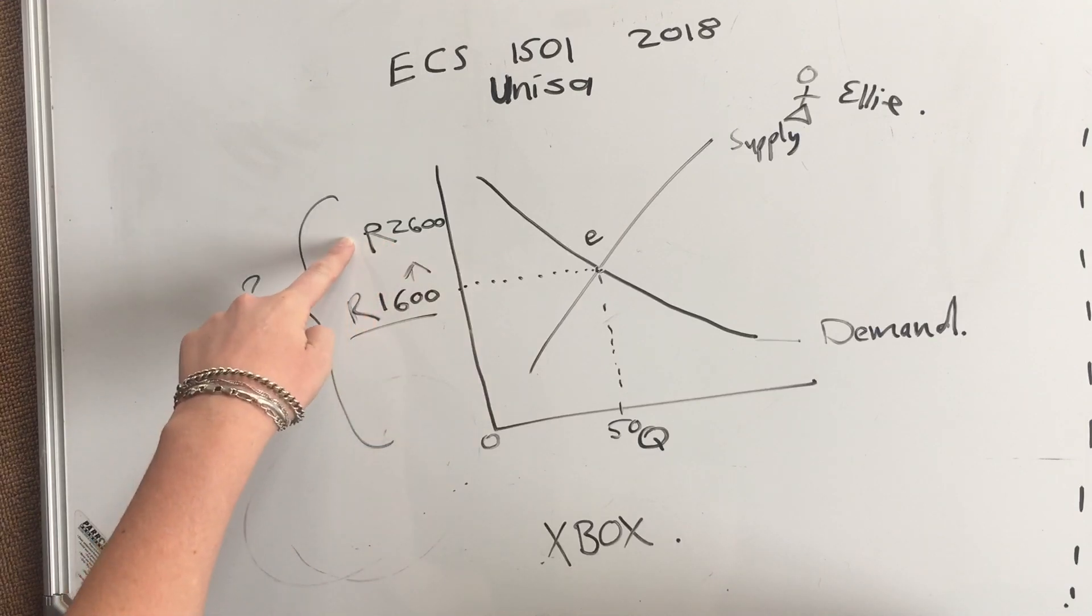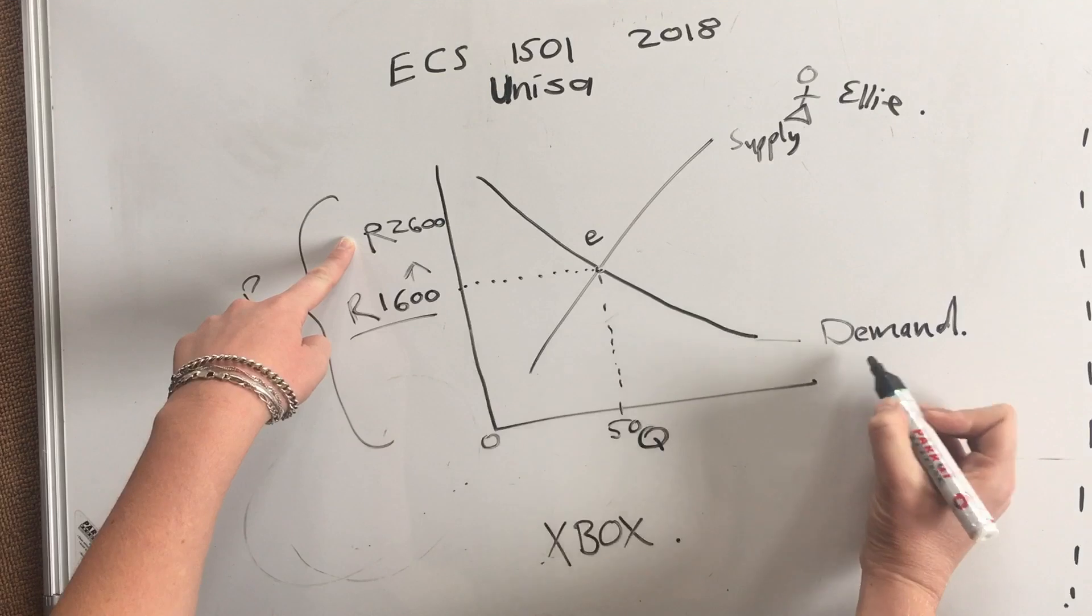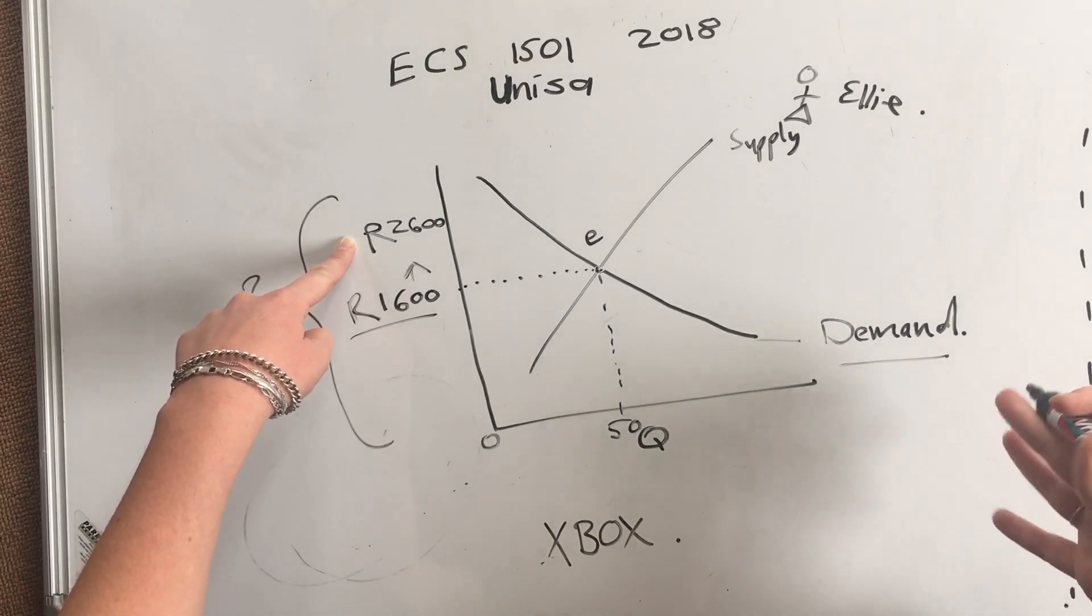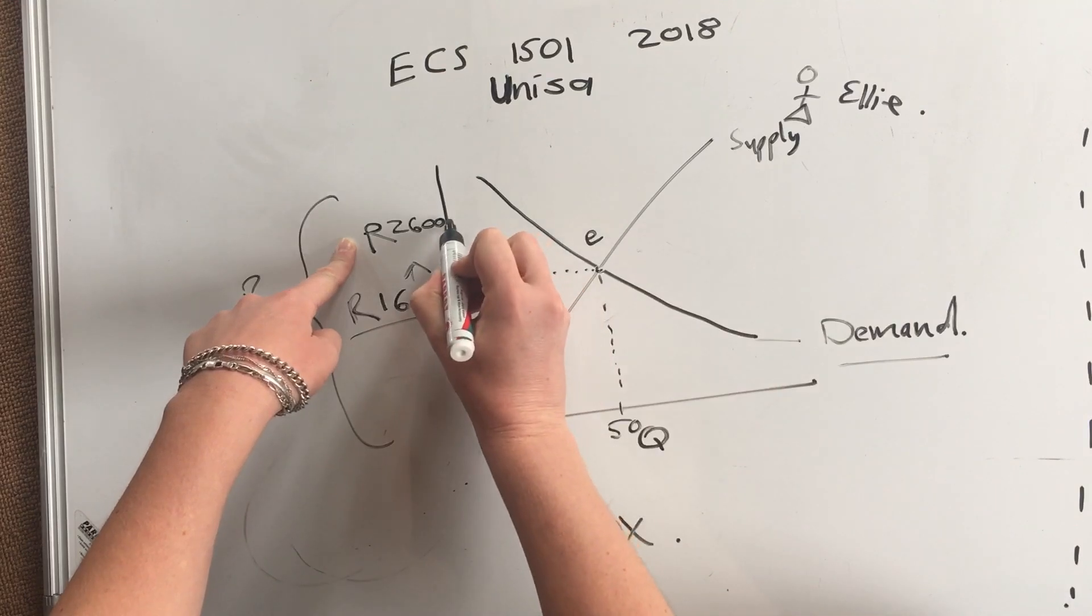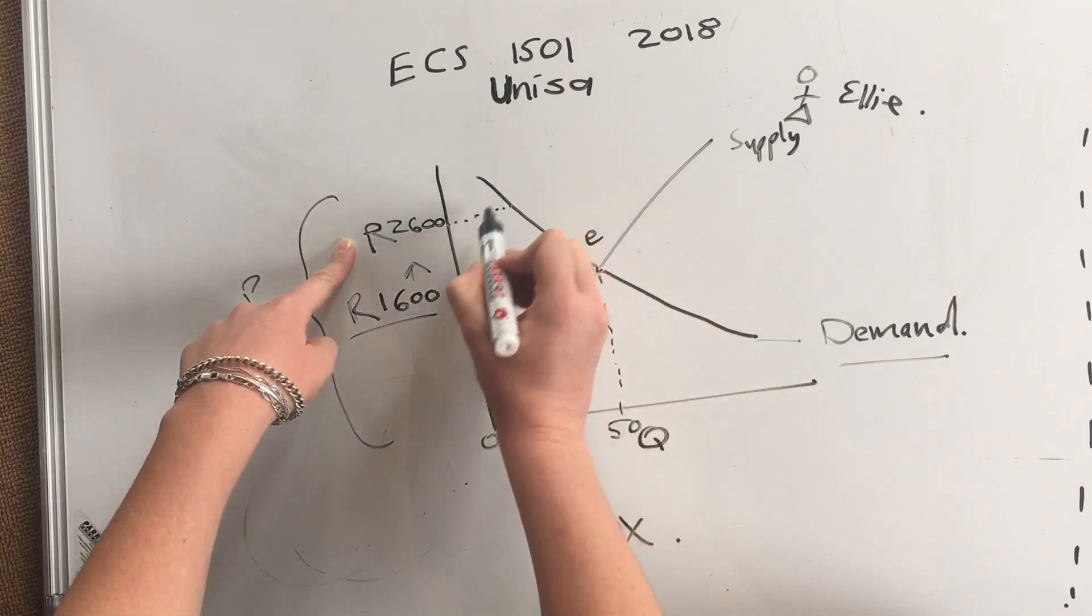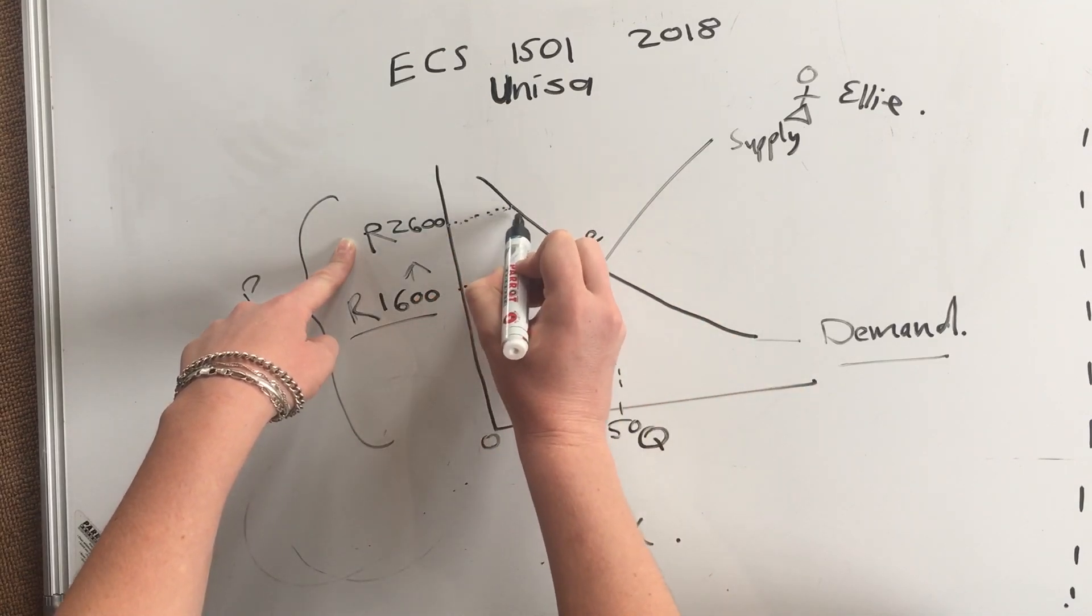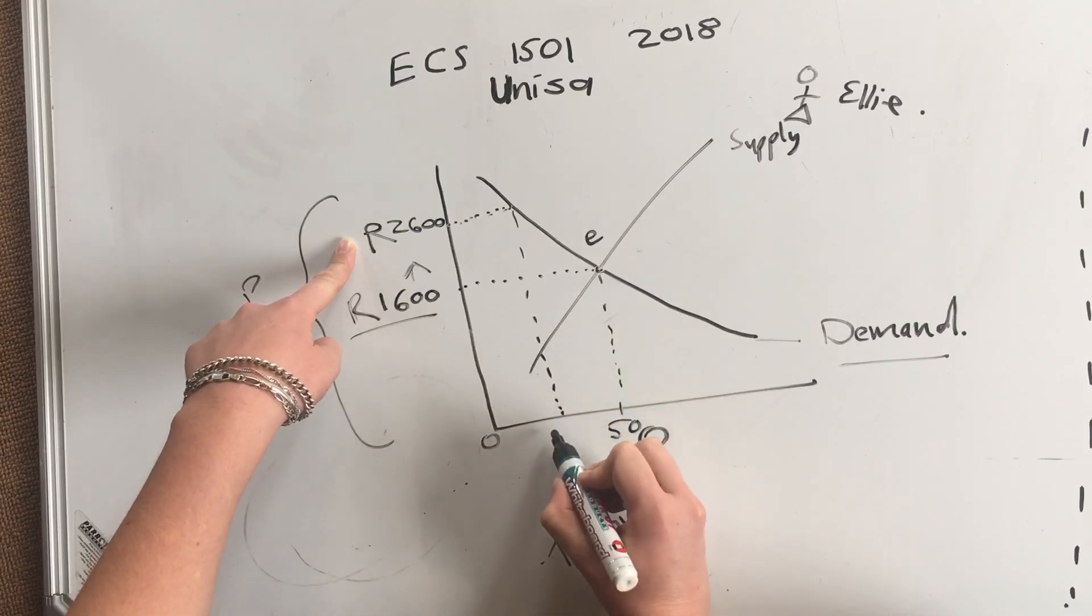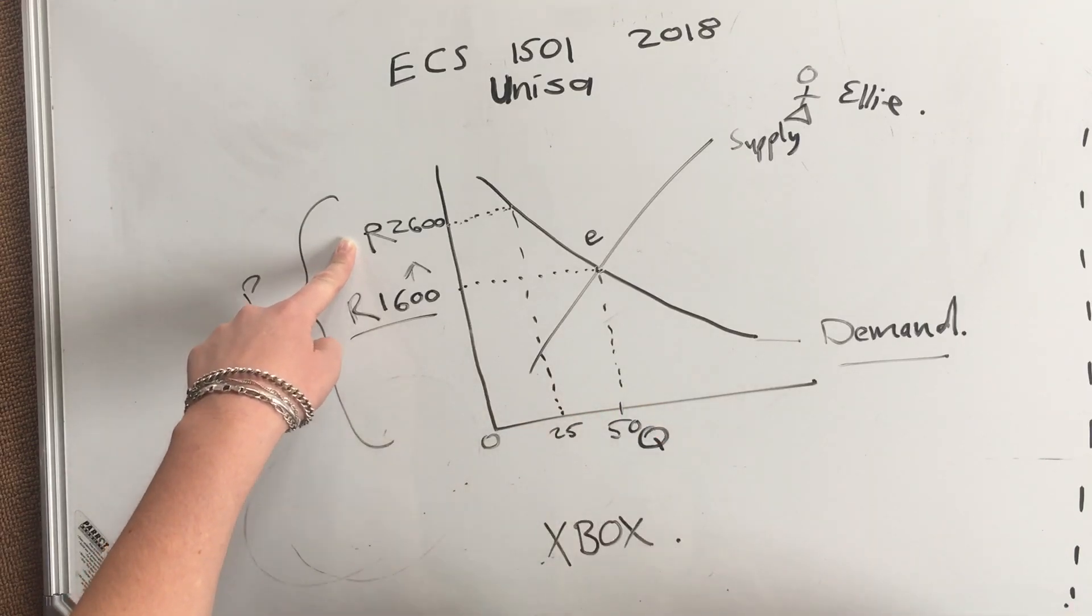As soon as it's 2600 rand, it's more expensive. Now the demand, which is the amount of people that actually want to buy it at this price, will be a lot less because that is the demand curve, so we stop there. If you take that all the way down, that is about 25 people.